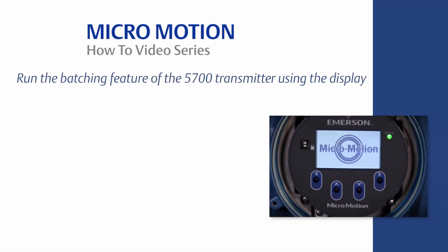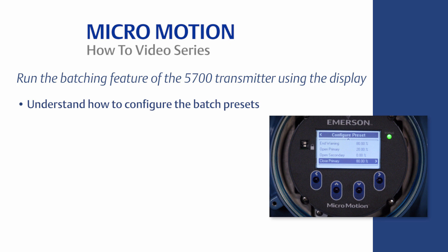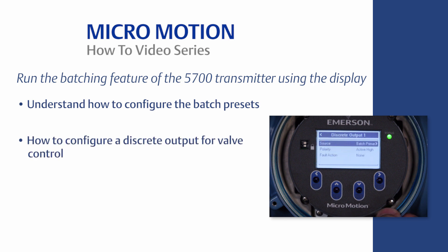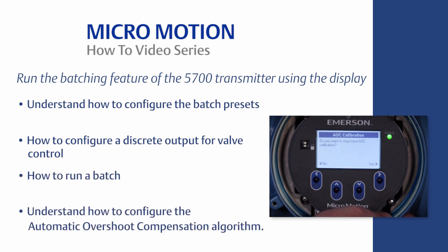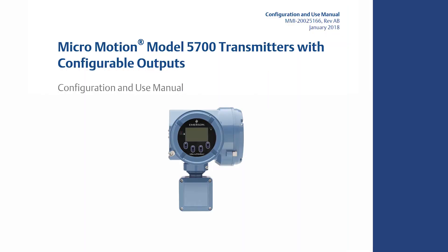In summary, you should now know the following: how to configure the batch presets, how to configure a discrete output for valve control, how to run a batch, and how to configure the automatic overshoot compensation algorithm. For the complete set of configuration instructions, please refer to the MicroMotion Transmitter Configuration and Use Manual, which can be found at www.emerson.com.